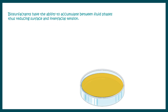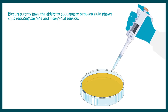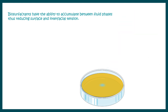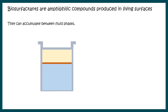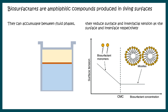Biosurfactants have the ability to accumulate between fluid phases, thereby reducing the interfacial tension. For example, imagine oil floating on water in a petri dish — if we add a small quantity of biosurfactants, the oil becomes dispersed, acting like an emulsifier. The biosurfactants accumulate between the two fluid phases and form micelles, trapping oil inside. These micelles have a hydrophilic outer surface that dissolves easily in water, so the previously immiscible oil becomes dispersed throughout the fluid.